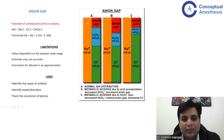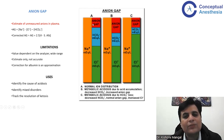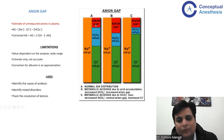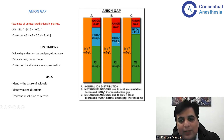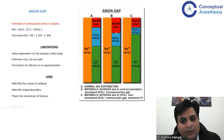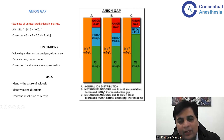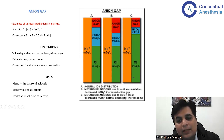Looking at the anion gap diagram: the major cation is sodium, the major anions are chloride and bicarbonate, and there are unmeasured anions including phosphorus, proteins, and many other small anions we cannot routinely measure. In metabolic acidosis, the bicarbonate level will reduce. When that happens, it must be compensated by something else — either by an increase in the anion gap, or by an increase in chloride with a normal anion gap. When the anion gap increases and bicarbonate decreases, this is high anion gap metabolic acidosis. When the anion gap remains normal and bicarbonate decreases because chloride has increased, this is normal anion gap metabolic acidosis.